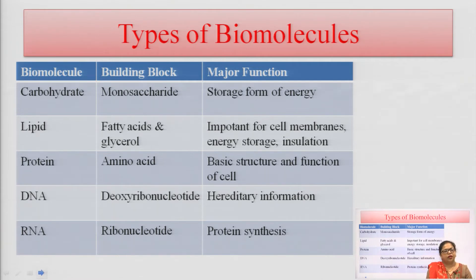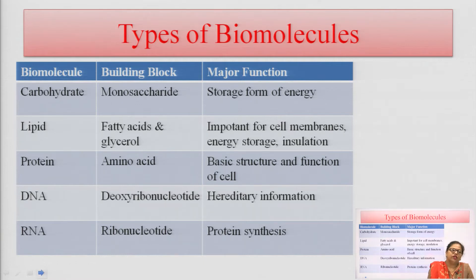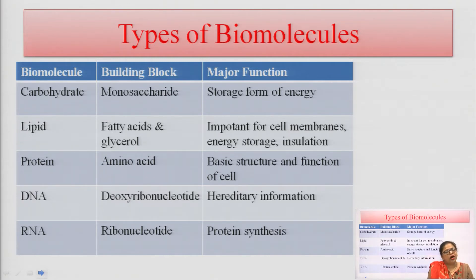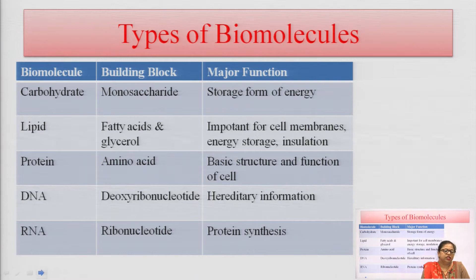Carbohydrate has monosaccharide as its monomer unit and is basically the storage form of energy. Carbohydrate is the main substance that gives energy to our body, and the main monomer unit is glucose. When glucose is metabolized in the body, it gives energy in the form of ATPs.